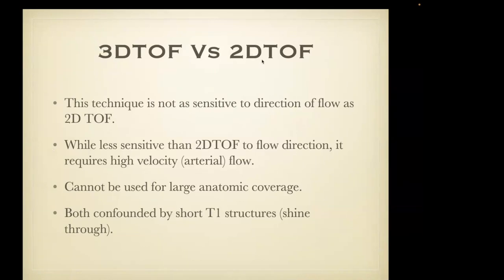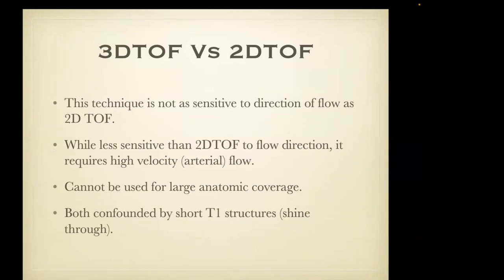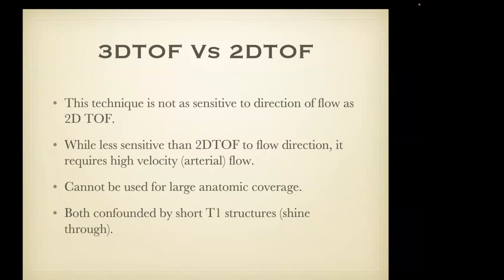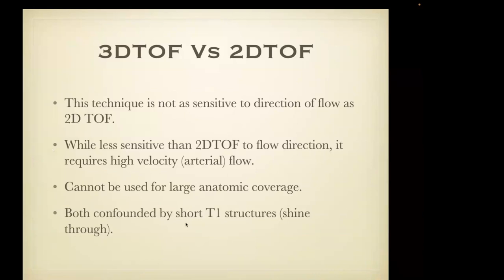2D time of flight is better when looking at flow of varying velocities — for example a patient with carotid stenosis where you may have slower flow in one carotid, and it's also why we use 2D time of flight for MR venography. Because 2D time of flight acquires multiple thin slices, you can extend coverage indefinitely — throughout the lower extremities or half the body — whereas 3D time of flight is limited to slab acquisitions. In 3D acquisitions the flow becomes suppressed as spins travel through the slabs, giving poor anatomic coverage. Both 3D and 2D time of flight can be confounded by structures with short T1 relaxation time — an artifact called shine-through.